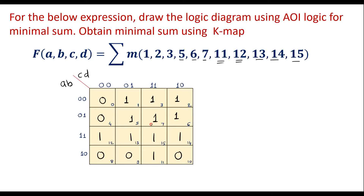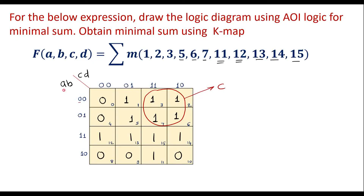Now let me simplify. We can observe that four ones can form a quad. While simplifying, first we do grouping of higher numbers — a group of 8 is not possible, so I will do a quad. It covers these two columns; the common value is 1 with respect to C. It also covers these two rows; between them 0 is common, which is A bar. That gives the term C A bar, i.e., A bar C.